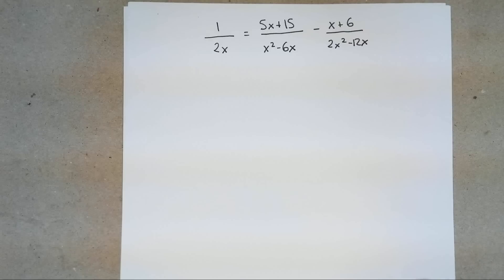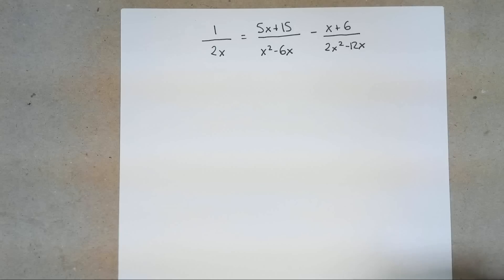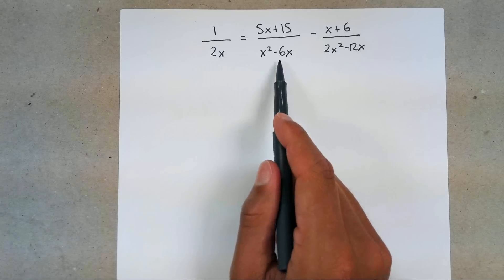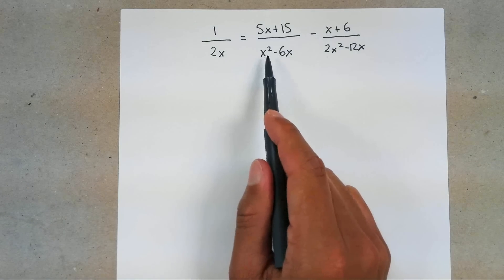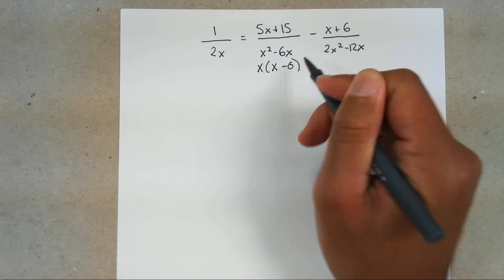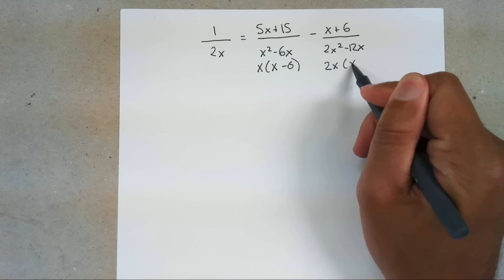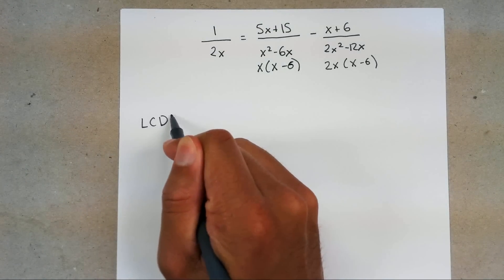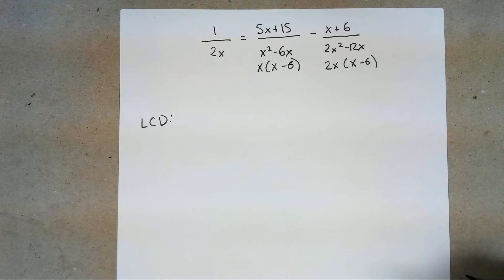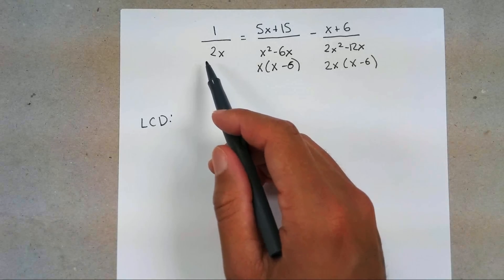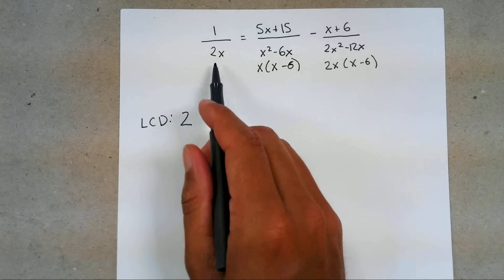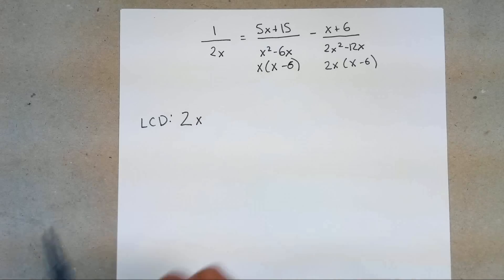We'll do two more. The hardest part about this is literally the factoring — if you're okay with factoring and finding the LCD, then solving for X is going to be fine. Now this more complicated example: I have 1 over 2X. For the next denominator, take out an X since there are two terms — left with X times X minus 6. Then take out 2X, leaving 2X times X minus 6. Once factored, find your LCD. Check your denominators for numbers — there's a 2, so your LCD includes 2. Variables — there's X to the first, so just X. Parentheses — X minus 6. So your LCD is 2X times X minus 6.